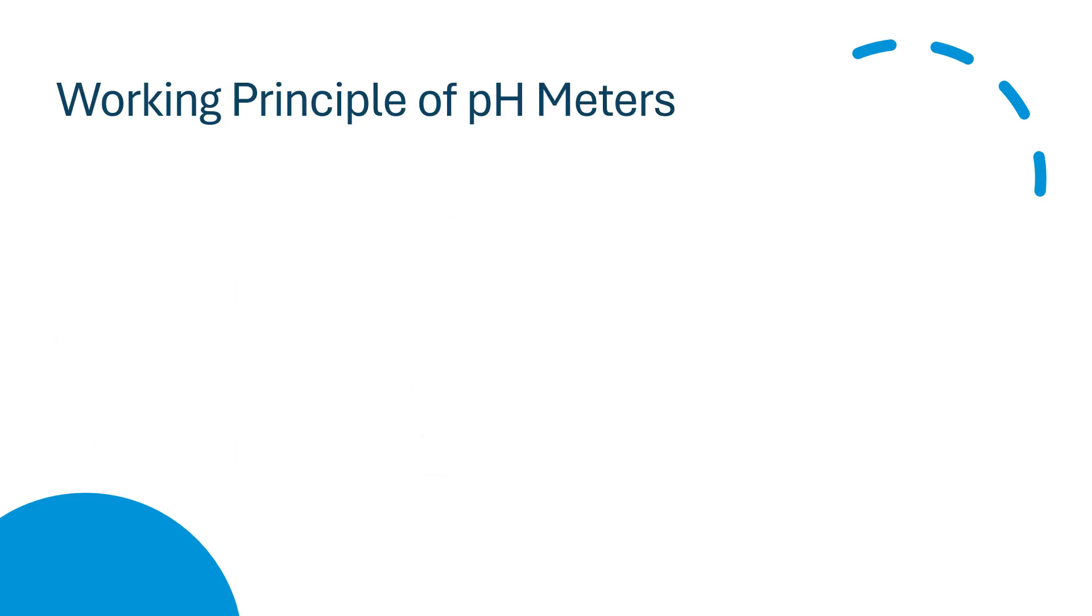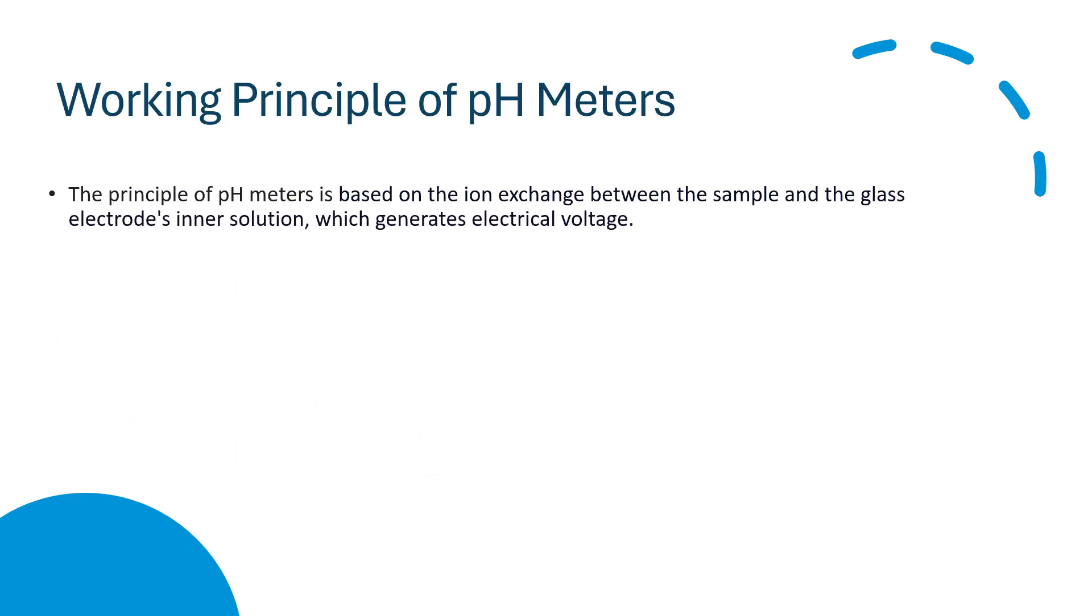Now we will discuss the working principle of the pH meter. The principle of the pH meter is based on the ion exchange between the sample and the glass electrode in a solution which generates electrical voltage. That means hydrogen ions interact with the glass electrode, generating a potential that is measured against the stable potential from the reference electrode. Then the meter converts this potential difference into a pH value.